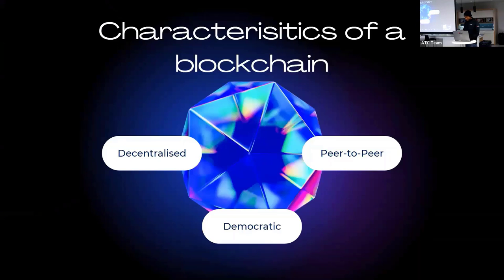The characteristics of a blockchain are that it's decentralized, as it is not hosted on a single server and each node or computer connected to the blockchain has a copy of the current state of the blockchain. It is democratic and ideally self-governing, as nodes in the blockchain get voting rights. It is peer-to-peer, as it operates without a middleman and all nodes connected communicate directly with each other.